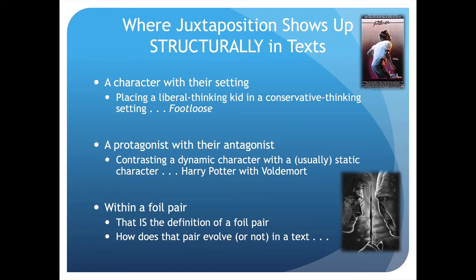We will start with juxtaposition in pictures, then move toward juxtaposition in texts. Here are some common ways authors use juxtaposition to advance their message. Number one, they will juxtapose a character with that character's setting. For example, in Footloose, a liberal-thinking kid from Chicago — an urban area from the North — is juxtaposed in a conservative-thinking setting, a town that doesn't necessarily agree with him. We're going to see how that contrast plays out.